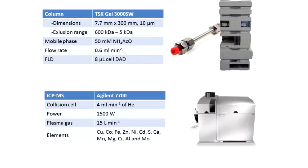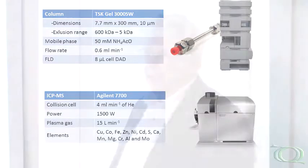We use the Agilent instrumentation — this is the 7700, still on the market. We are now using more of the 8800, and I'll show you toward the end of the talk our first use of that instrument, without which we couldn't have done the last few slides.